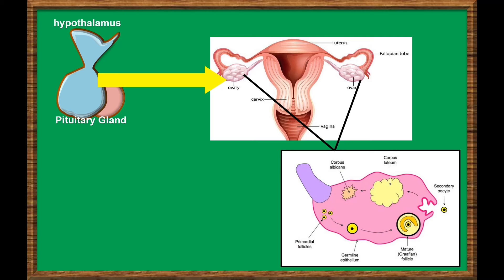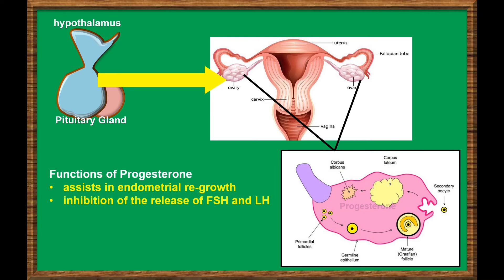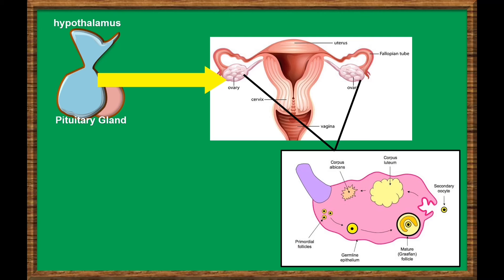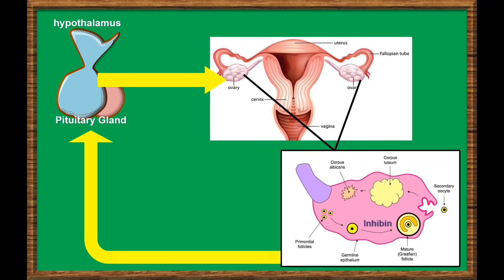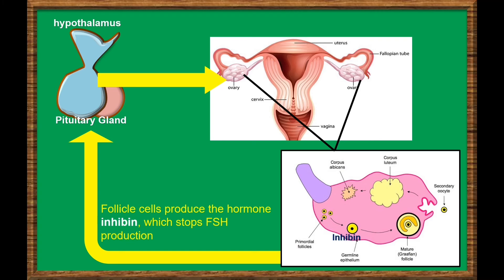Progesterone is released from developing follicles. It also assists in endometrial regrowth and stops or inhibits the release of FSH and LH. In addition, follicle-stimulating hormone stimulates the development of egg cells called ova, which develop in structures called follicles. Follicle cells produce the hormone inhibin, which inhibits or stops the release of follicle-stimulating hormone. This creates a negative feedback mechanism in the female reproductive system.